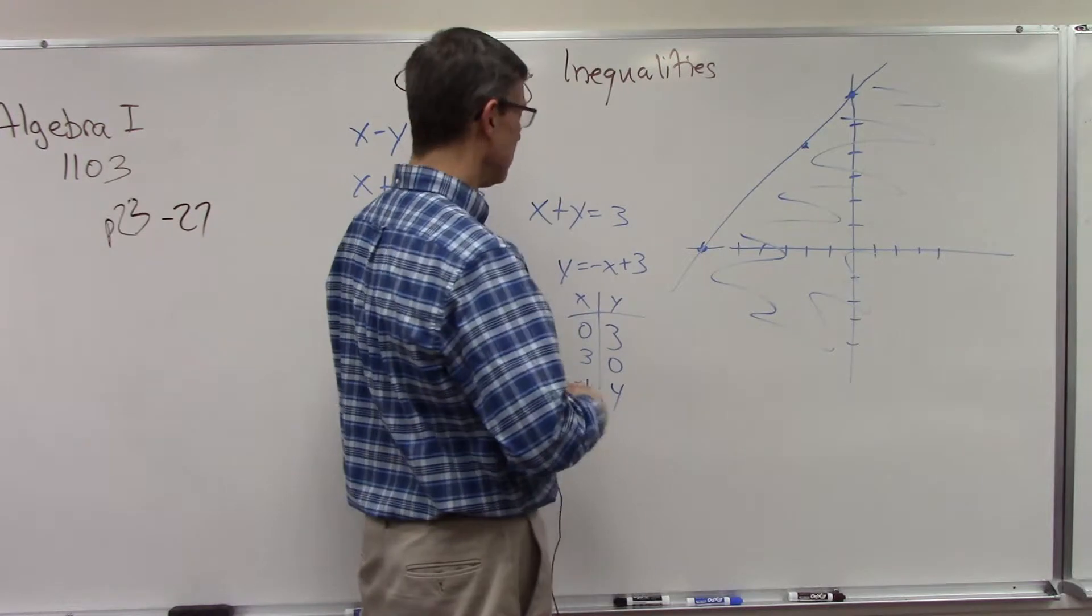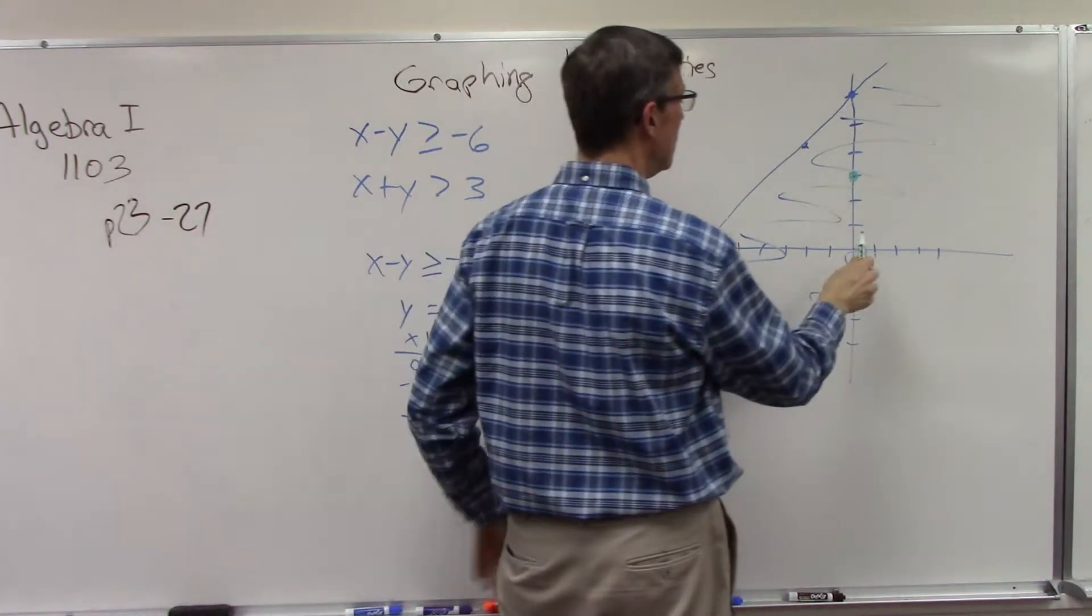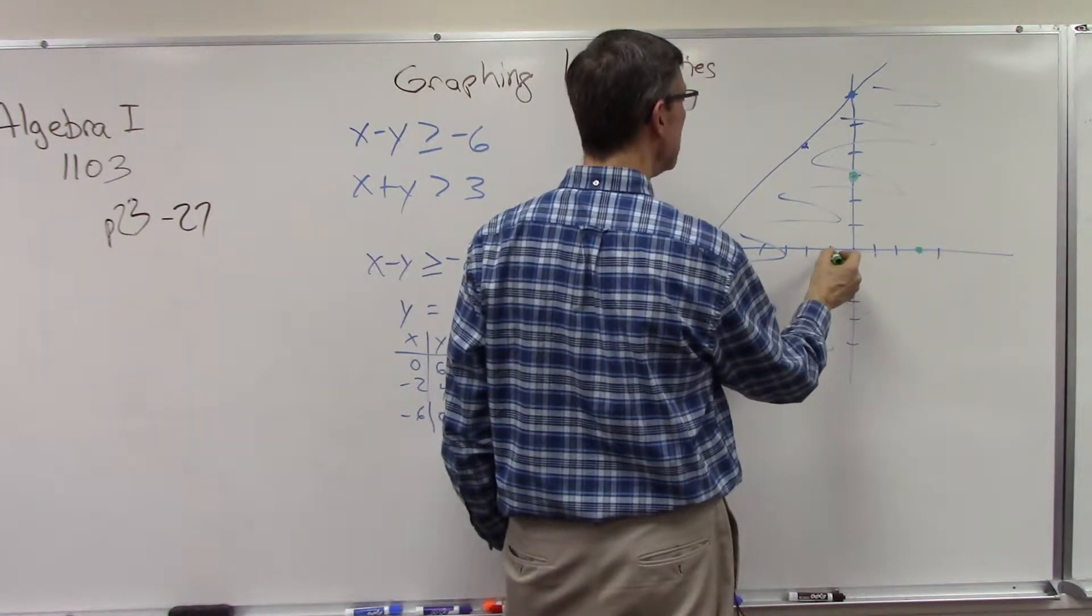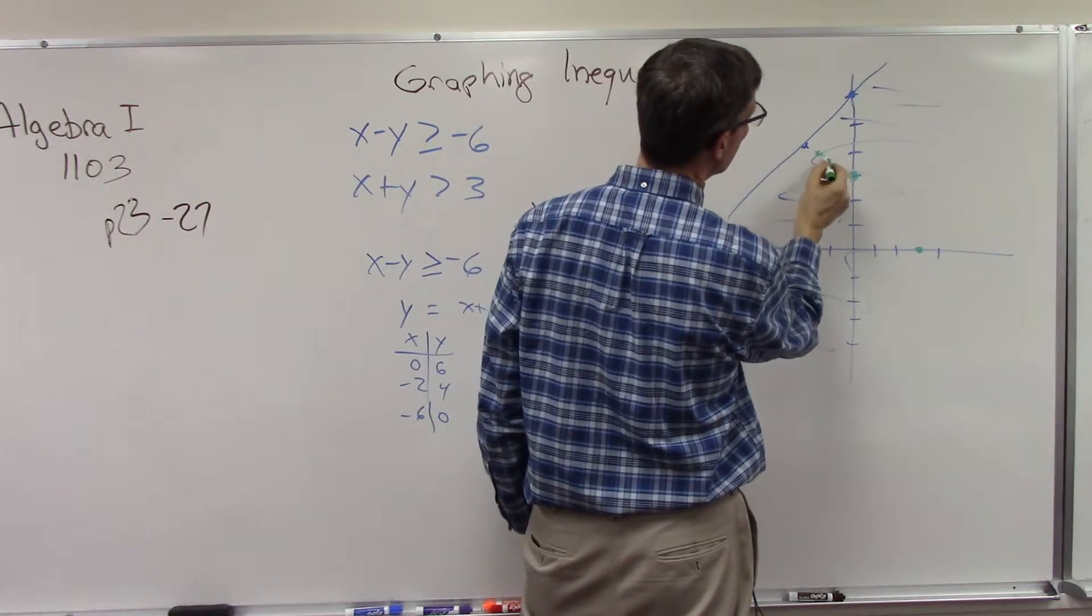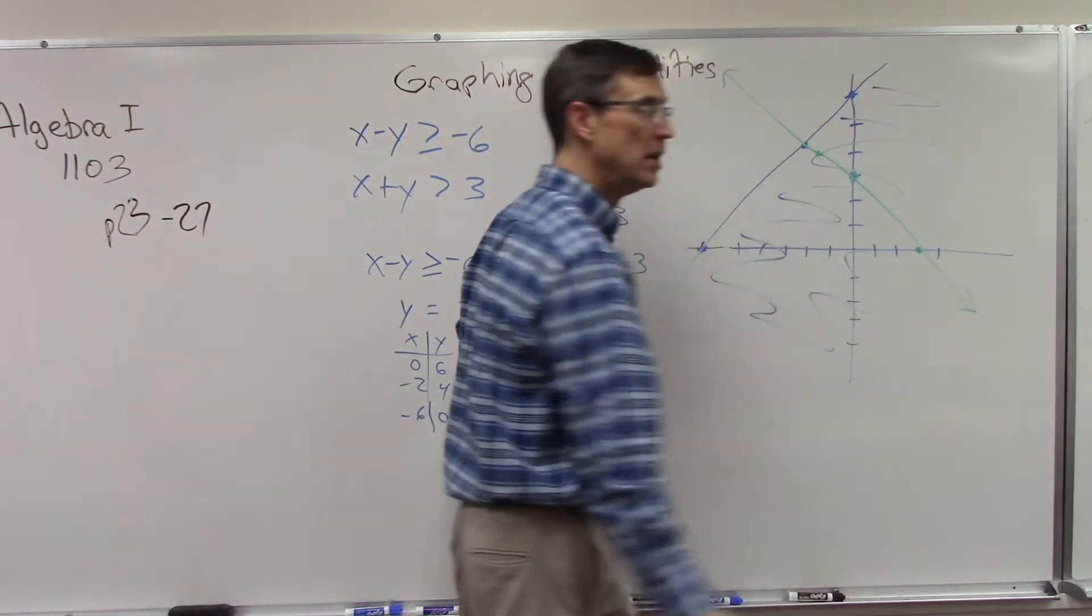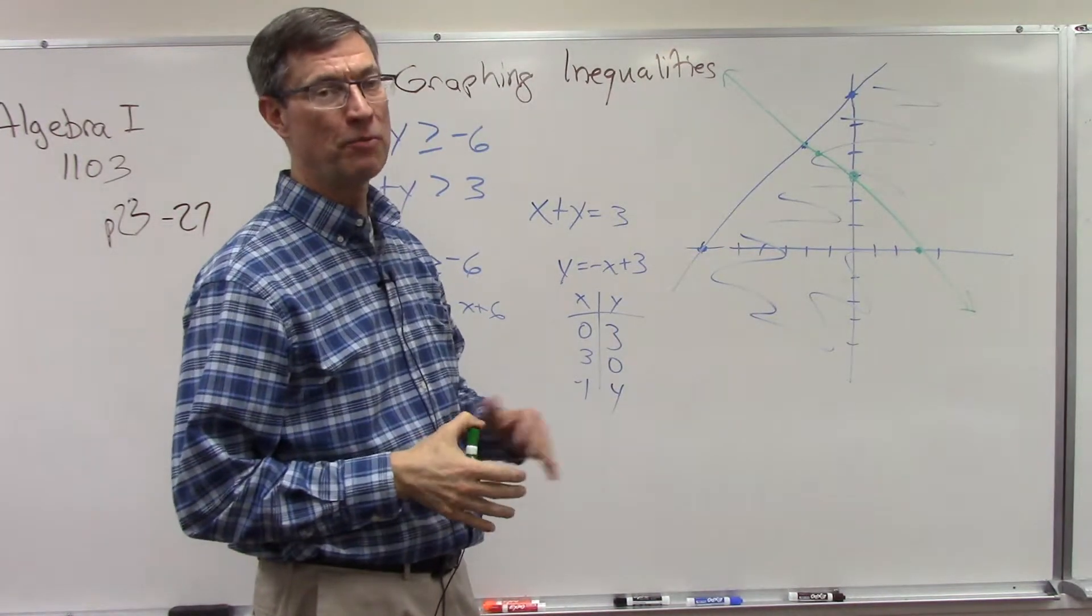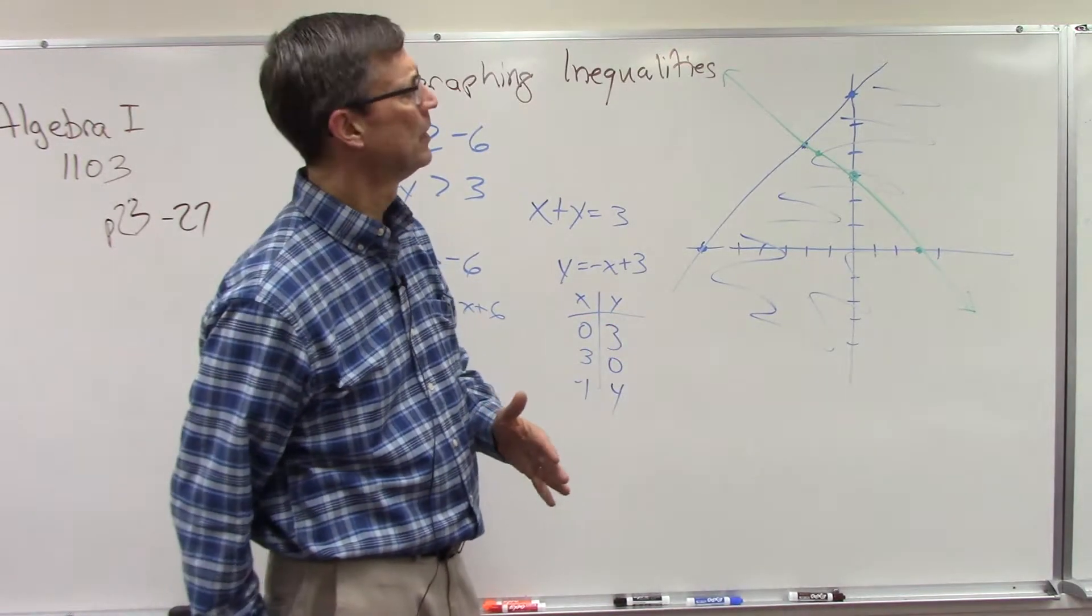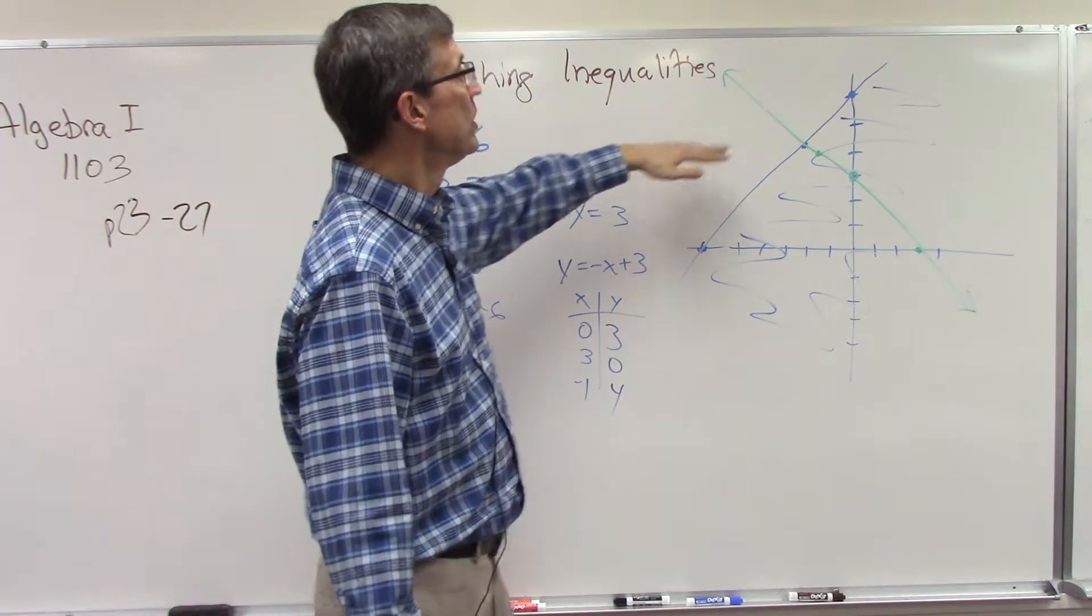Let's see where these points show up. Let me choose a different color since I have different colors. Zero three, here's that point. Three zero, there's that point. And then negative one four, there's that point. So these are all lining up like that. Obviously you need to do these yourself and I would suggest doing it on graph paper. All of these are easier if you use graph paper rather than doing them in your pace.